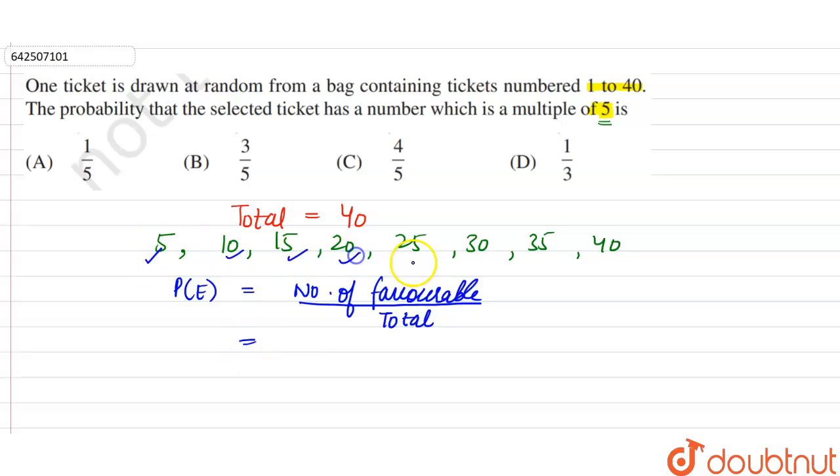So 1, 2, 3, 4, 5, 6, 7, 8. There are 8 multiples of 5. And total number of outcomes are 40.